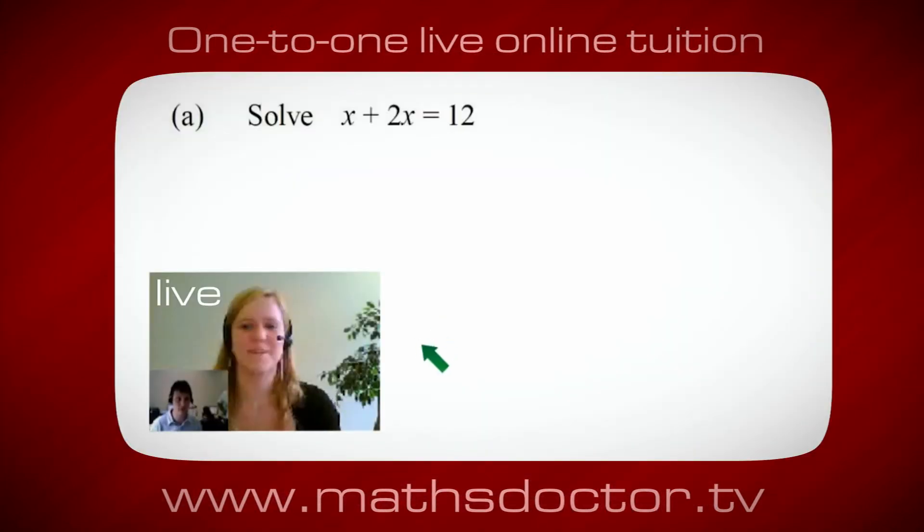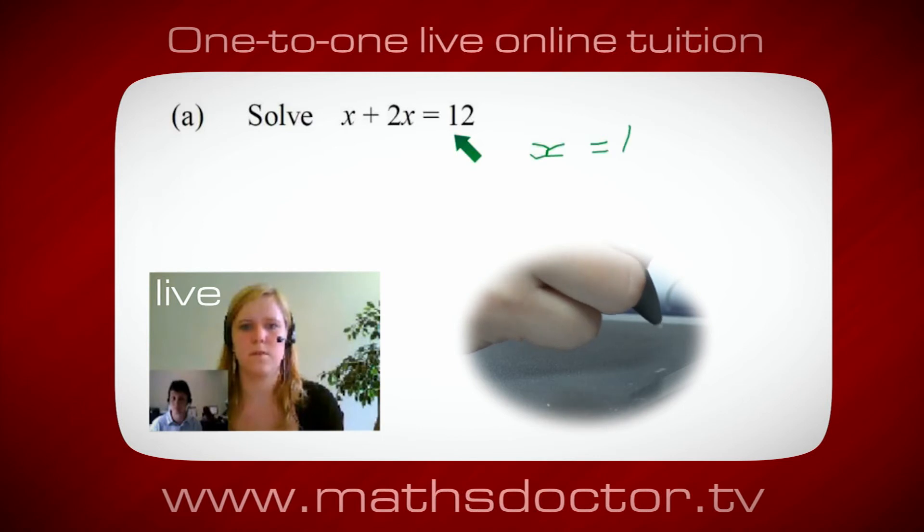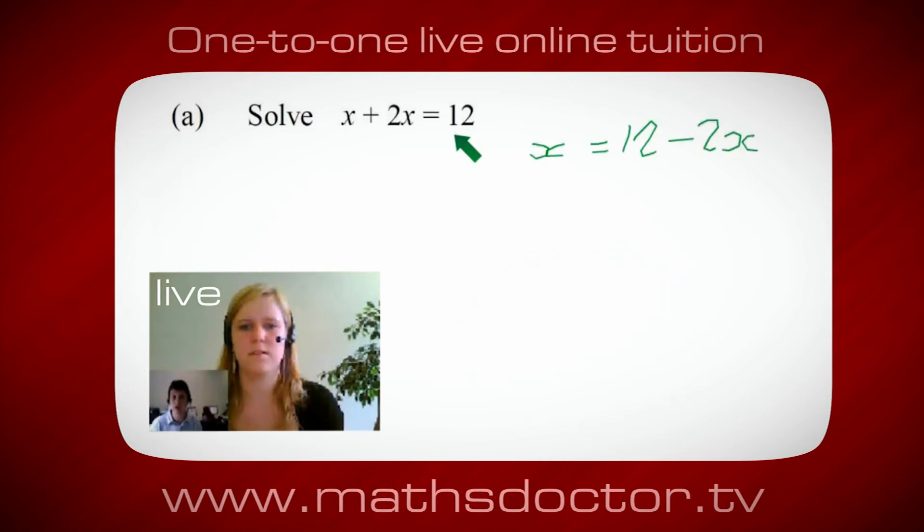Okay Marie, so let's have a look at this one. So solve x plus 2x equals 12. So what do you think you do first? Okay, well I want x on its own. So I would put x equals 12 minus 2x. Okay, so a lot of the time we want to get x by itself. But what we want to do first is get all of these x's together. So can you see anything we can do with this?